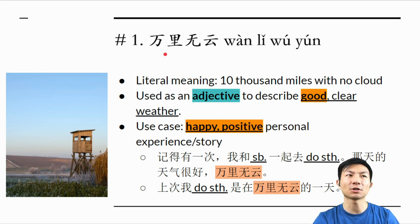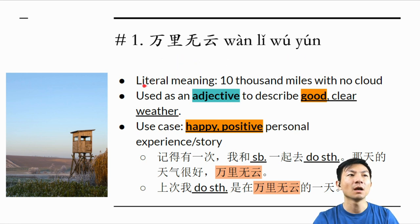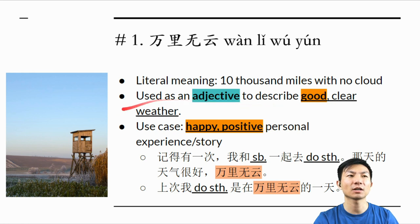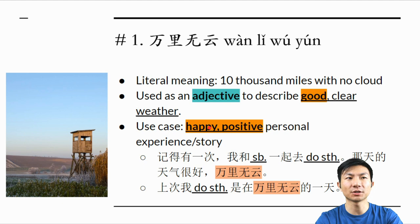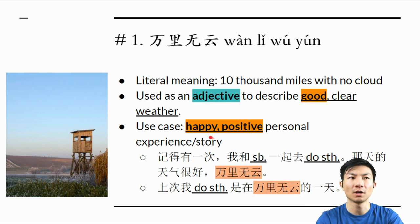The first 成语 I'm going to be talking about is 万里乌云. 万里乌云 literally means 10,000 miles with no cloud, and it is used as an adjective to describe good clear weather. One specific use case for this 成语 is in your personal story elaboration — you can set a happy, positive tone in your story. Here are some examples.